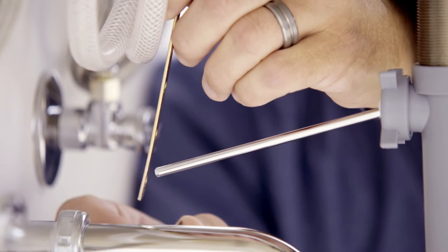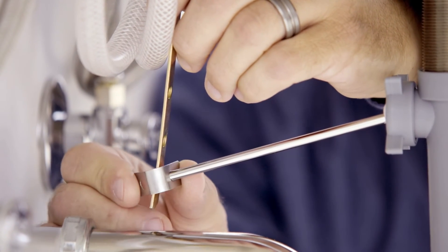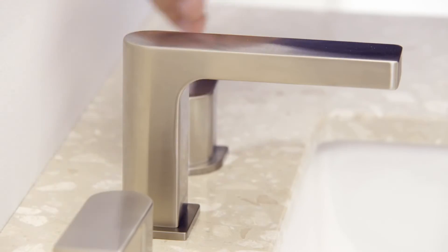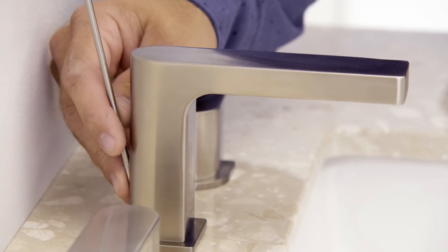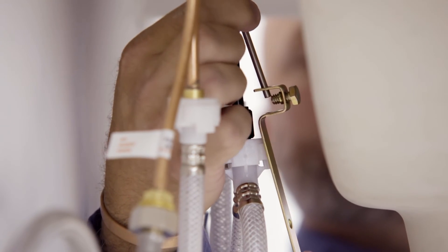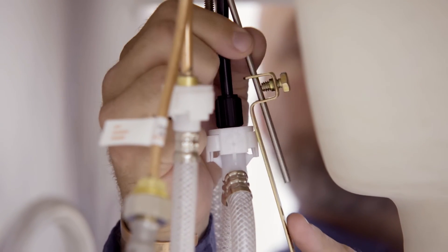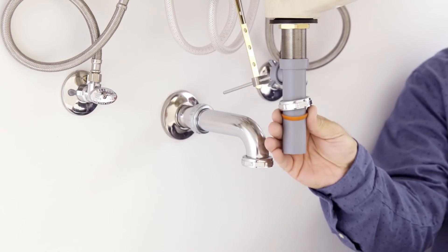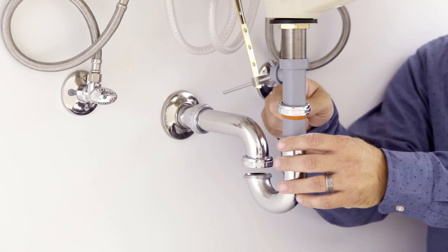Attach the horizontal rod to the strap using the clip. Install the lift rod and tighten with the screw. Connect the assembly to the drain.